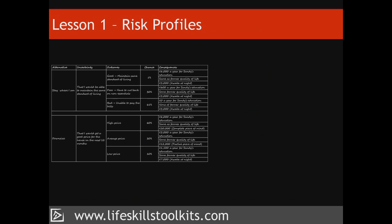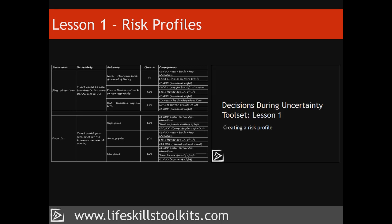Lesson one: Risk Profiles. Risk profiles help you to make sense of uncertainty and provide a way of simplifying a decision that is made complex when you can't be certain if one or more consequences will occur until after you've made your decision. The risk profile lesson provides examples of uncertainty in decision making and how the creation of a risk profile helps bring clarity so that a decision can be made.